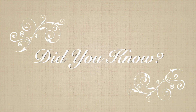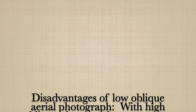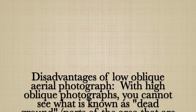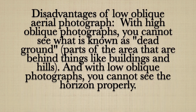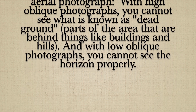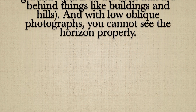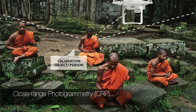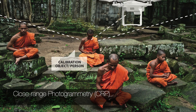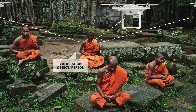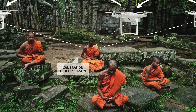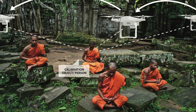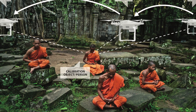Did you know? Disadvantages of low oblique aerial photographs: with high oblique photographs, you cannot see what is known as dead ground — parts of the area that are behind things like buildings and hills. And with low oblique photographs, you cannot see the horizon properly. There is also something called close-range photogrammetry, which consists of positioning everyday cameras closer to a subject to measure buildings, recreate forensic scenes, or model archaeological objects.